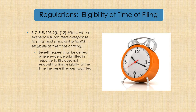Eligibility is determined at the time of filing. Per the regulations at 8 CFR 103.2, eligibility is going to be assessed at the time the benefit request is filed. If you have a clerical error in your state court order — say an order that incorrectly states your client's country of birth but you've given USCIS a birth certificate with the correct country — you might get an RFE regarding the discrepancy and need to get a corrected order. But your client was eligible at the time of filing, so age-out should not be an issue.